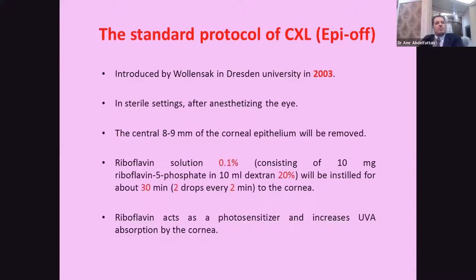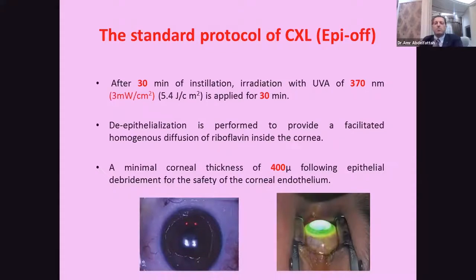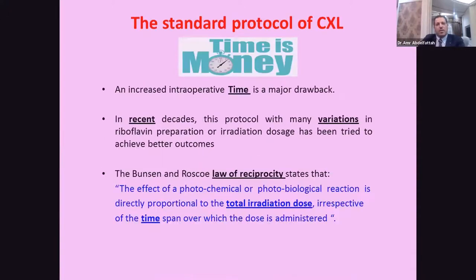The first protocol for corneal cross-linking was introduced at the Dresden University by Dr. Wollensak in 2003. In this trial, the epithelium is removed over eight to nine millimeters. Riboflavin 0.1% in dextran 20% is applied for 30 minutes, two drops every two minutes. Then ultraviolet-A at 370 nanometers at 3 milliwatts per square centimeter is applied for 30 minutes. A minimum corneal thickness of more than 400 microns after epithelial removal is required for safety.